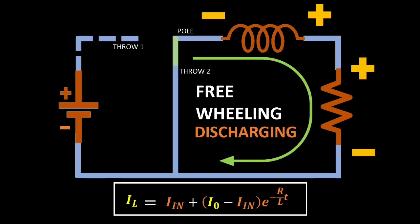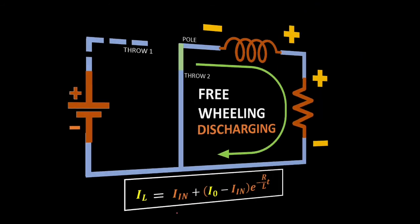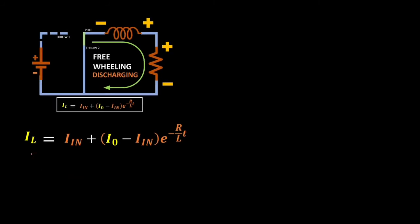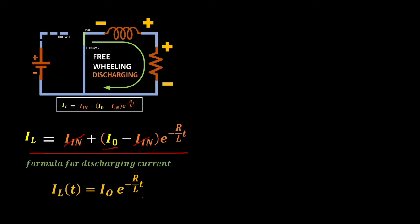Now let's find the voltage and current during the discharging phase. In this condition, we are in the pre-wheeling state. Using the general formula for current in the RL circuit, with the input disconnected, I_IN will be 0. We are left with whatever inductor current we have, which also serves as our initial current I_0 at the time of step. Therefore, the current equation for the discharging phase is I_L = I_0 · e raised to −(R/L)·t.